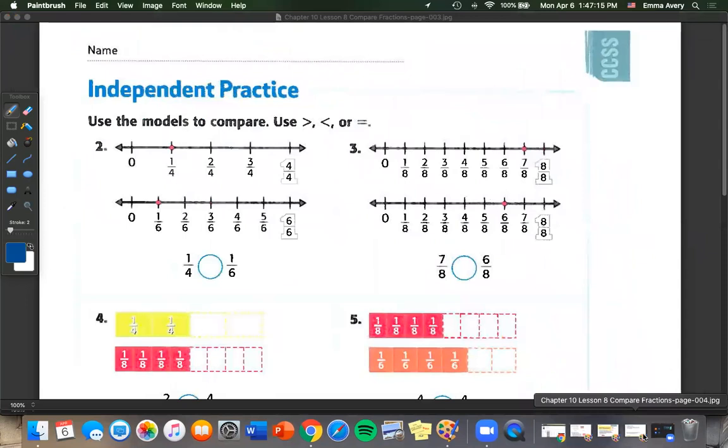On to the next example. Use the models to compare. So this time they've given us number lines. So here's our one fourth and our one sixth. If we draw a line going down, one fourth is greater than one sixth.